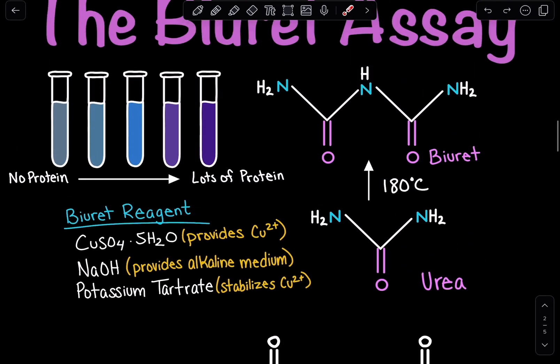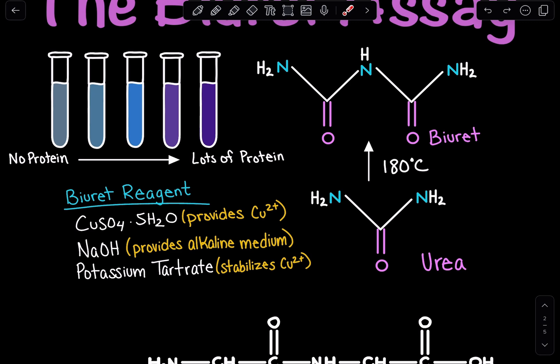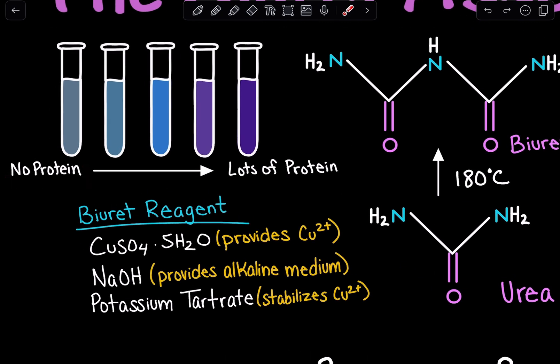We can actually see this example here. When we have no protein, we're not going to have that purple hue. When we have lots of protein, we're going to have that purple hue, and this is going to have a higher absorbance value than this one.